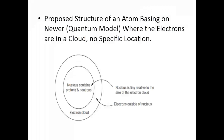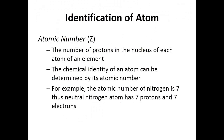This proposed structure helps us as young scientists understand that we can also continue discovering things, and perhaps one day we will find our own discoveries. The nucleus is tiny relative to the size of the electron cloud, and electrons are outside the nucleus. Inside the nucleus there are protons and neutrons, while electrons surround the nucleus.